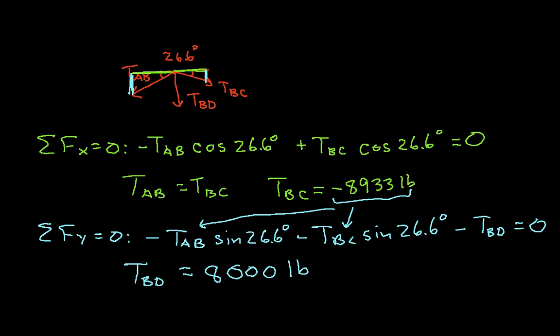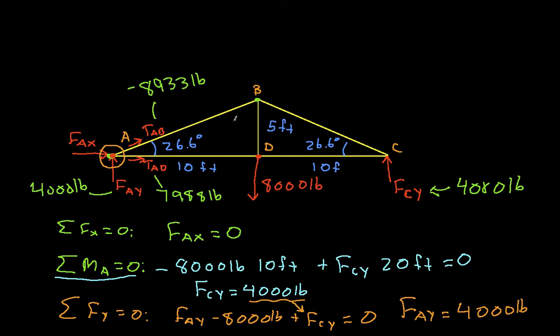Let's go write this down on our free body diagram. TBD is 8,000 pounds. We know that TAB is minus 8,933 pounds. That's the same as TBC, so this is minus 8,933 pounds. We now know everything except TDC.